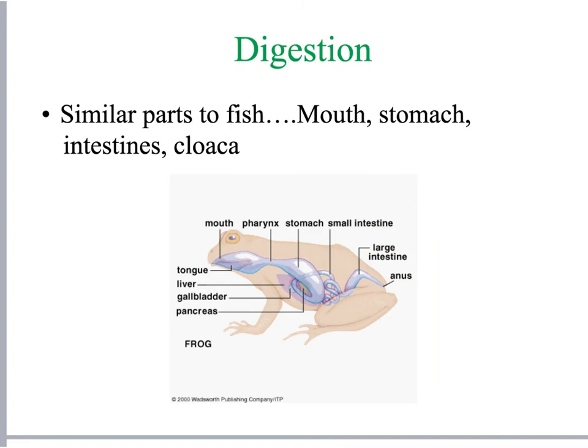Structurally, the frog's digestion is very similar to the fish's. The frog eats its prey; food goes through the mouth, then the esophagus, stomach, intestines, and cloaca. The cloaca is interesting because within it you would find both eggs and sperm passing through it, as well as digestive waste and other materials.